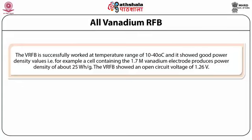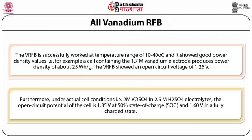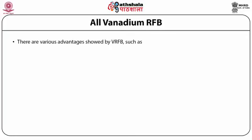The VRFB operates successfully at a temperature range of 10 to 40 degrees Celsius and showed good power density values. For example, a cell containing 1.7 molar vanadium electrode produces a power density of about 25 watt-hour per gram. The VRFB showed an open circuit voltage of 1.26 volts. Under actual cell conditions, i.e., 2 molar VOSO4 in 2.5 molar H2SO4 electrolyte, the open circuit potential of the cell is 1.35 volts at 50% state of charge (SOC) and 1.6 volts in a fully charged state.